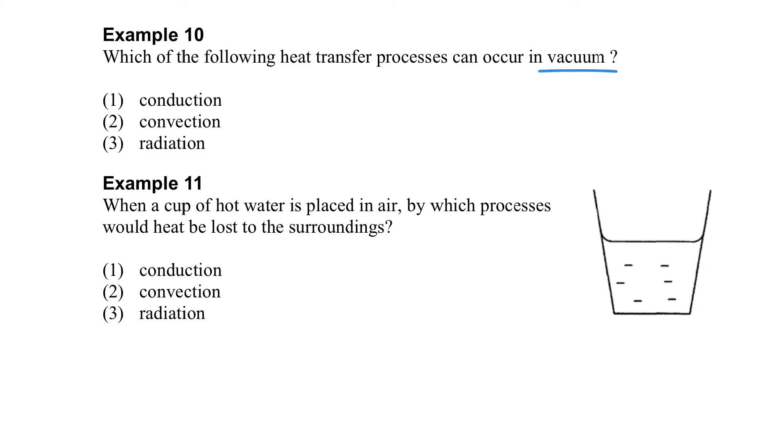Let's go through a few examples related to the heat transfer process. Which process can occur in vacuum? Yes, it's only radiation, because for conduction it requires a medium, either solid, liquid, or gas, and for convection it must be a fluid. So only radiation can transfer heat through vacuum.